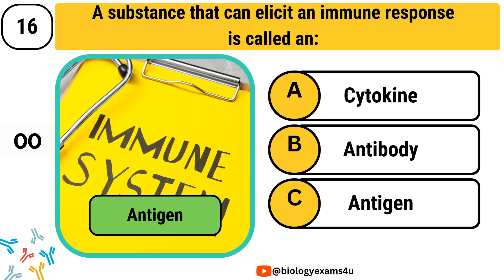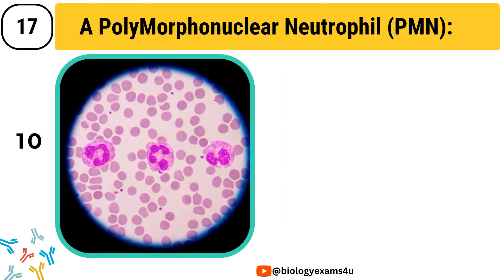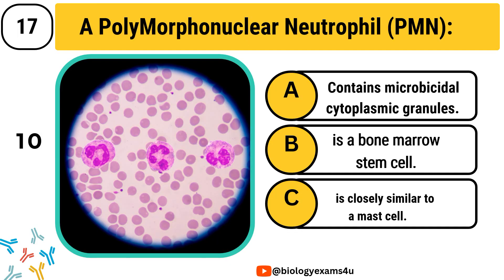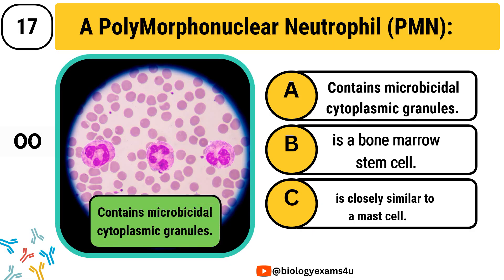Question number 17. A polymorphonuclear neutrophil: Option A, contains microbicidal cytoplasmic granules. Option B, is a bone marrow stem cell. Option C, is closely similar to mast cells. The correct answer is contains microbicidal cytoplasmic granules.